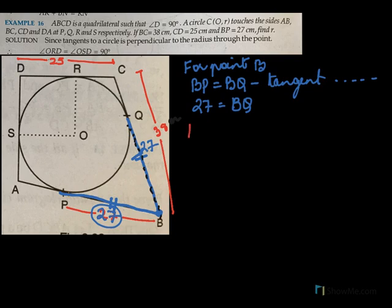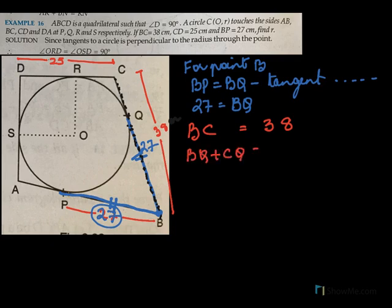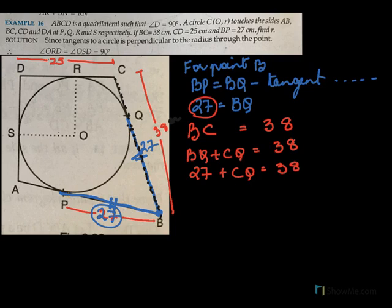Now take a look at BC. They said BC equal to 38. And what is BC made up of? BC is made up of BQ plus CQ. So for BC I am going to write BQ plus CQ equal to 38. Our BQ is 27, so 27 plus CQ equal to 38, and CQ equal to 11.